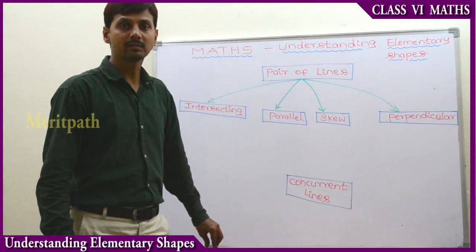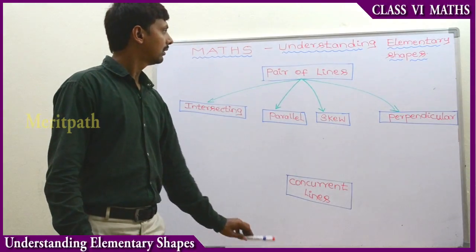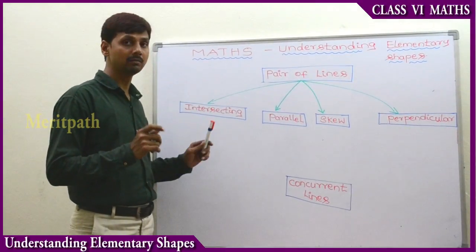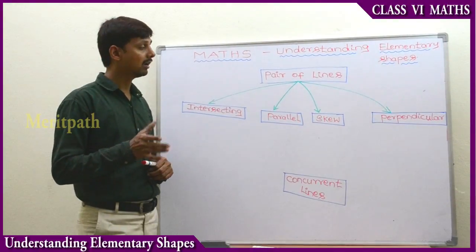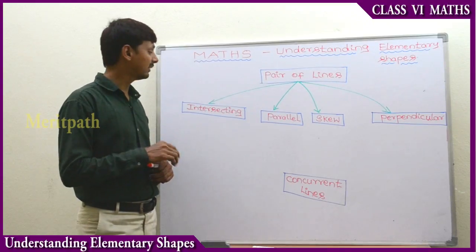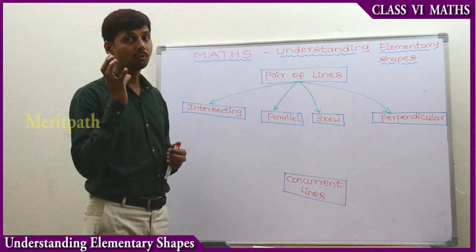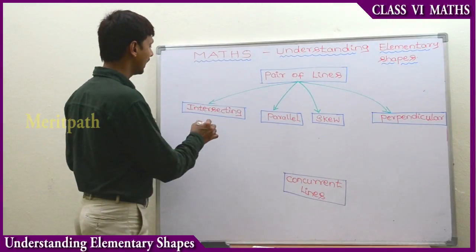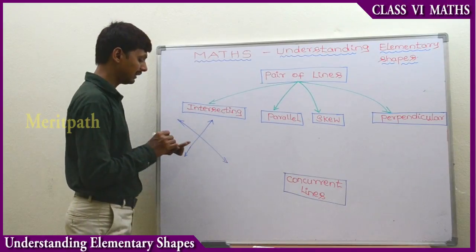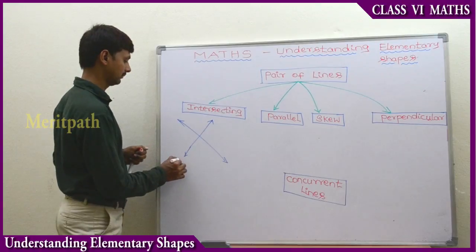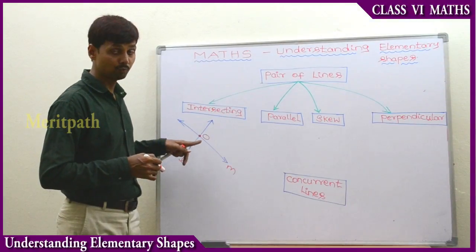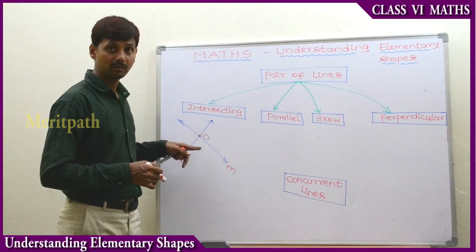Let's discuss about pairs of lines. Two lines can be either intersecting, parallel, or skew lines. Two lines that have one common point are called intersecting lines — they meet at one common point O.